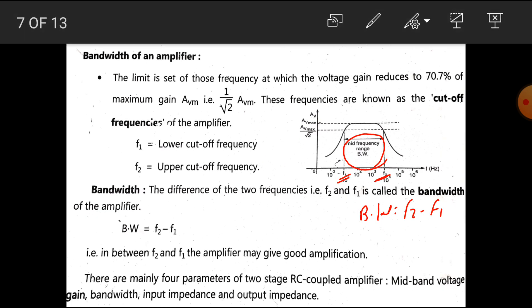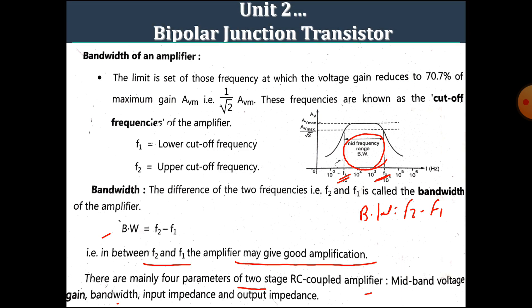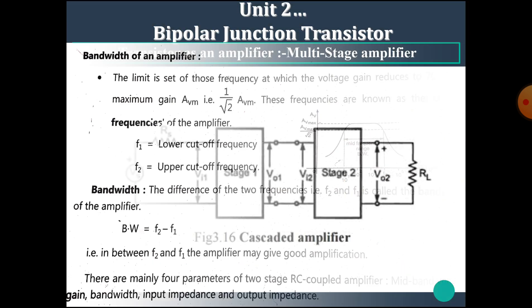I hope you all understand the concept of bandwidth. In between F2 and F1, the amplifier may give good amplification. There are mainly four parameters of the two-stage RC-coupled amplifier: mid-band voltage gain, bandwidth, input impedance, and output impedance.